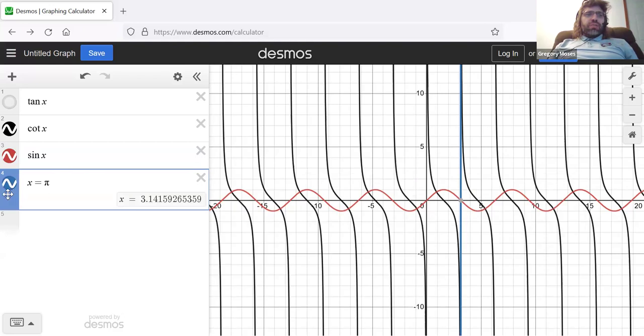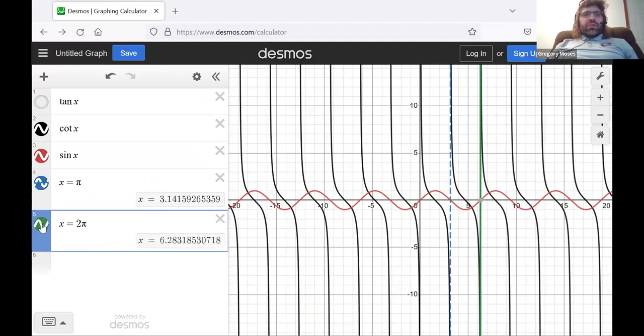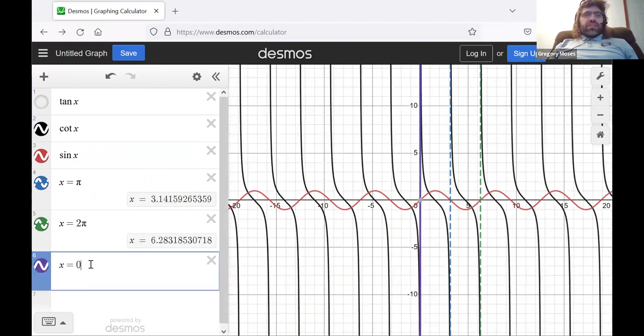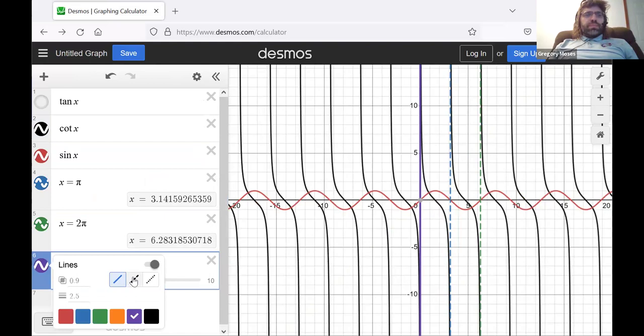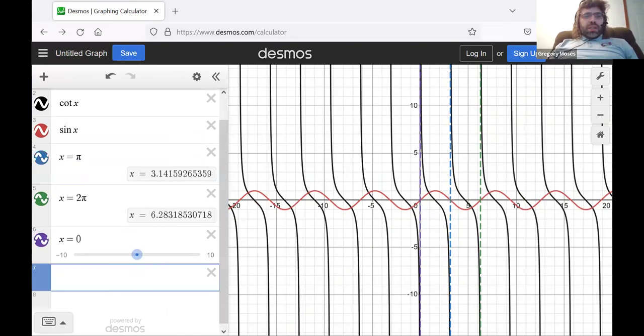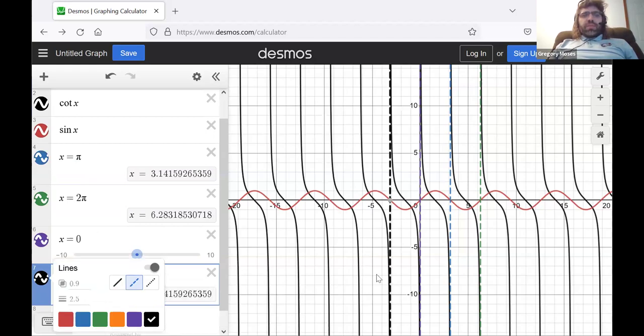So, here is a vertical asymptote at π, a vertical asymptote at 2π, a vertical asymptote at zero. That is to say, π units to the left of this vertical asymptote, a vertical asymptote at negative π, and so on.